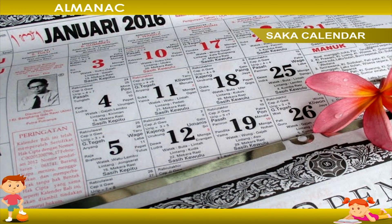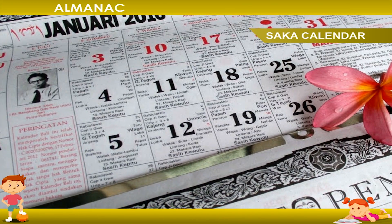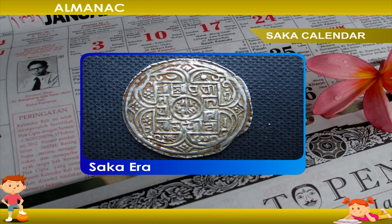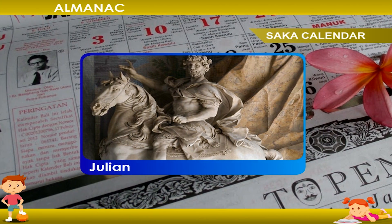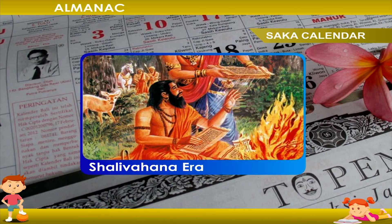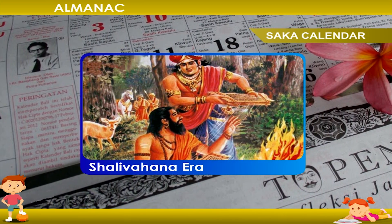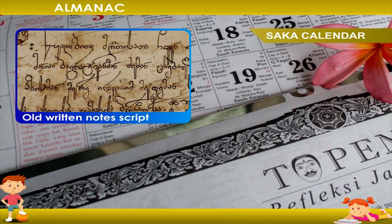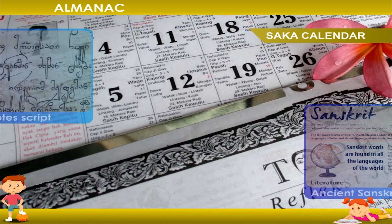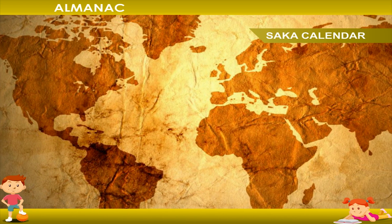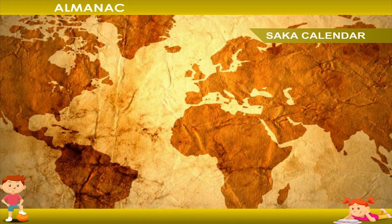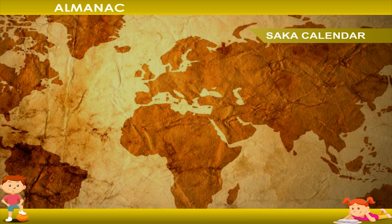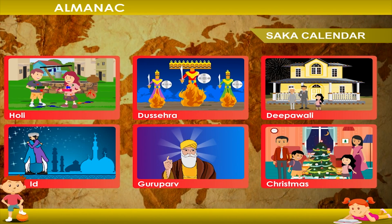The Saka calendar was developed during the Saka era, which is a historical calendar era corresponding to Julian year 78. It is also called the Shalivahana Saka era and is used in India. It has been used in many old scripts and ancient Sanskrit texts. The Saka calendar is the official calendar of India and is also called the Hindu calendar. It is used in the calculation of religious festivals of India.